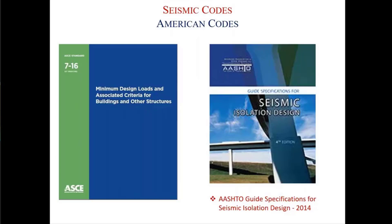The American codes are mostly commonly used in the world. Mostly ASCE 7-16, Chapter 17 of ASCE 7-16. Then if it is a bridge with isolators, you use the AASHTO Guide Specifications for Seismic Isolation Design.